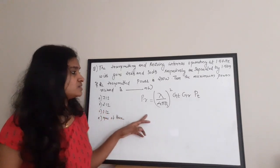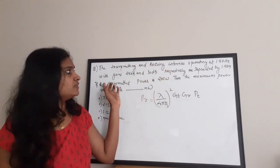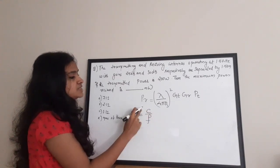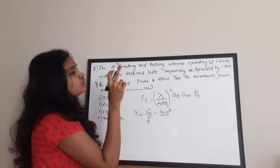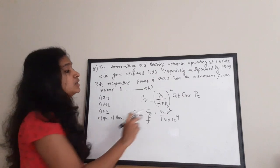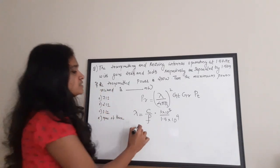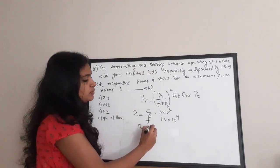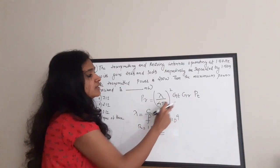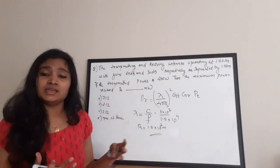PR is the received power to find. Lambda is wavelength, calculated as c by f: 3 times 10^8 divided by 1.5 times 10^9, giving the wavelength. The separation r equals 1.5 kilometers, that is 1.5 times 10^3 meters. Gt and Gr are the gains of transmitter and receiver respectively, given as 25 dB and 30 dB. However, these must be converted from dB to a linear ratio before substitution.